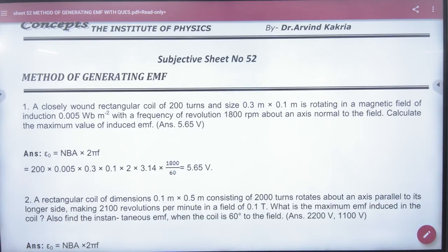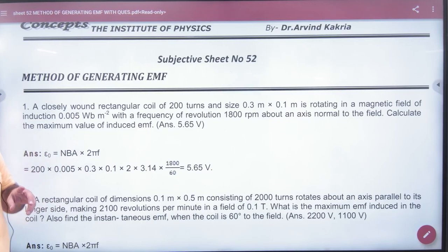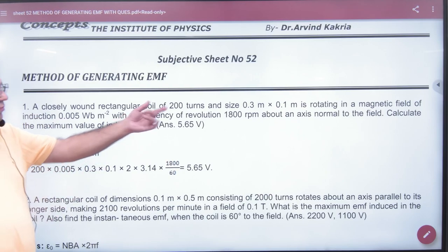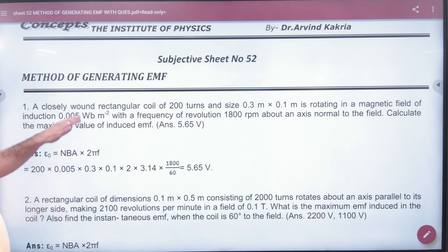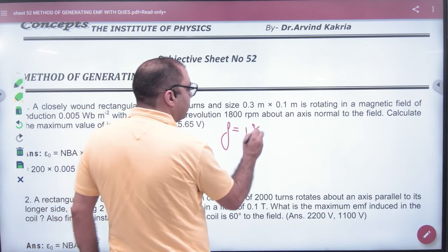The question is: A closely wound rectangular coil of 200 turns and given size is rotating in a magnetic field of induction. Given 200 turns, size given, area given, B given, frequency given: 1800 RPM. Frequency divided by 60.